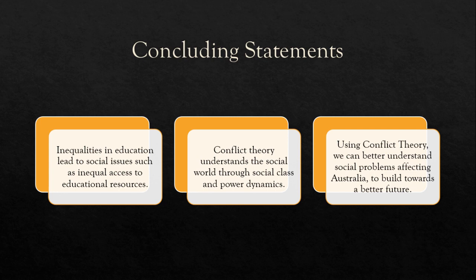Inequalities in the education system of Australia allow for issues of unequal job opportunities, unemployment, and resource inequality to persist. Conflict theory aims to address social inequalities through the lens of social class and power dynamics, and can be used as a sociological lens to understand and address educational inequality. In working towards solving national social inequalities, conflict theory provides a hopeful future for bettering our future generations.